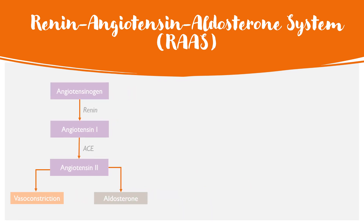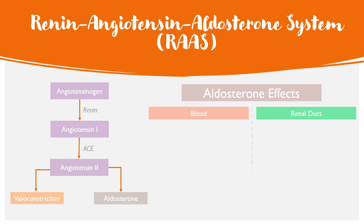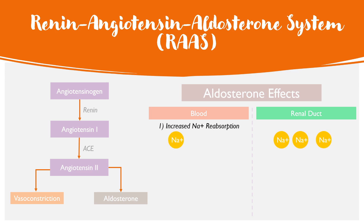When the RAS system is activated and angiotensin 2 triggers aldosterone release, there are three main effects aldosterone has, occurring between the blood and the renal ducts. The first effect is increased sodium reabsorption — more sodium is reabsorbed from the renal duct into the blood.